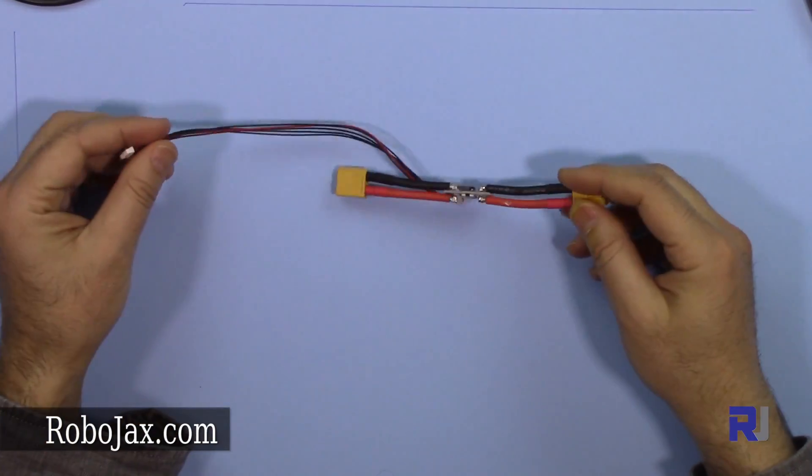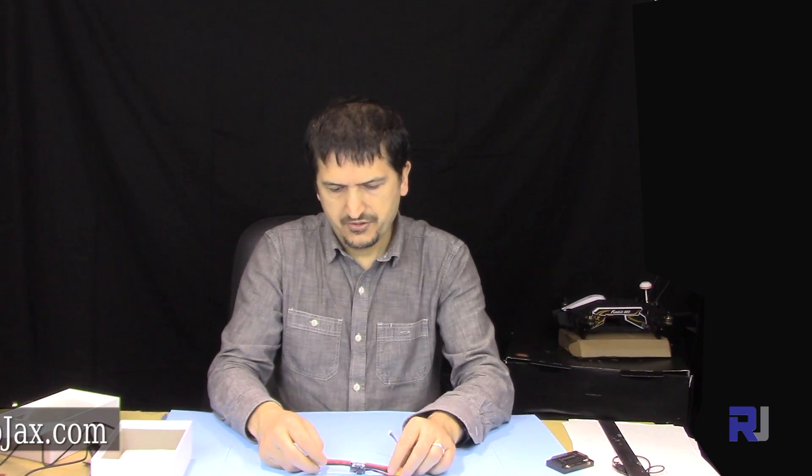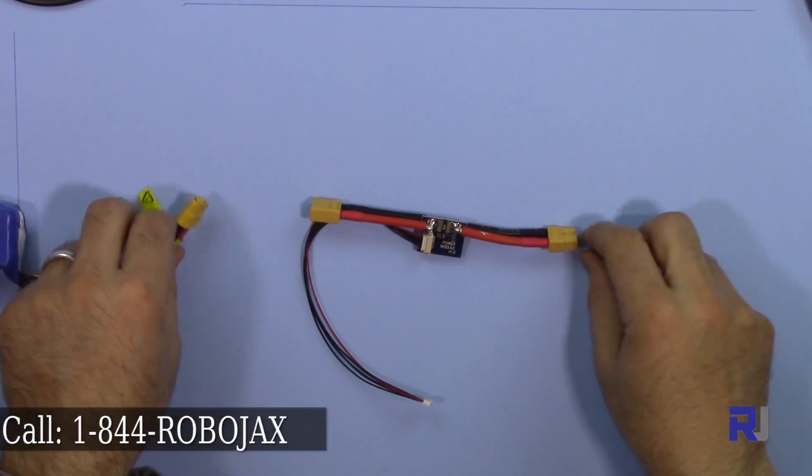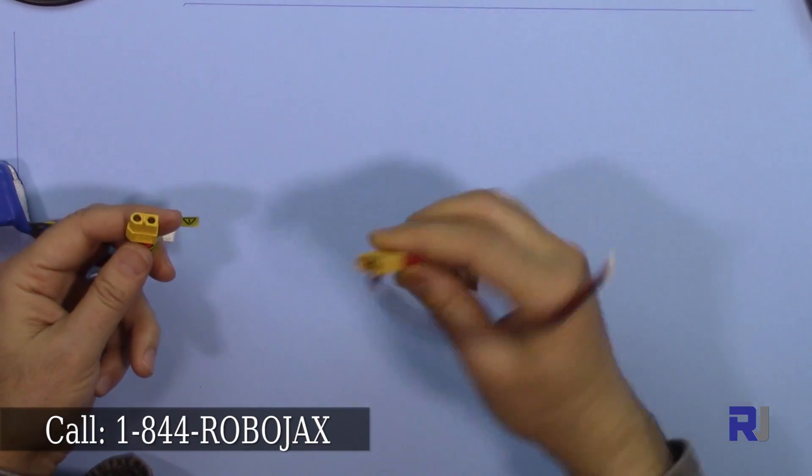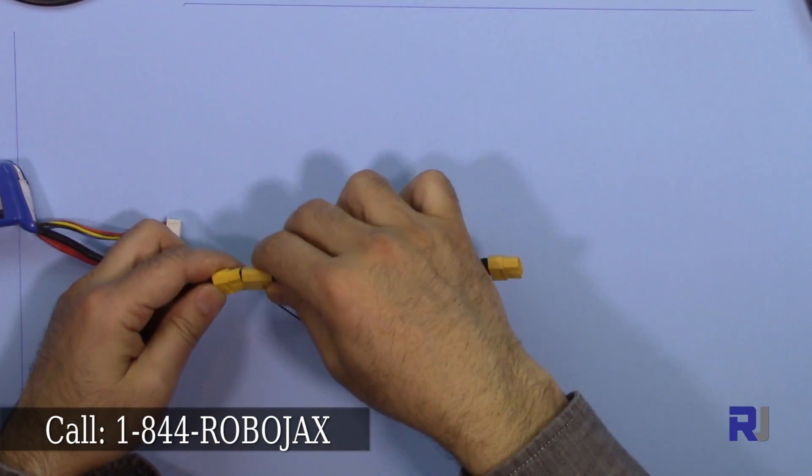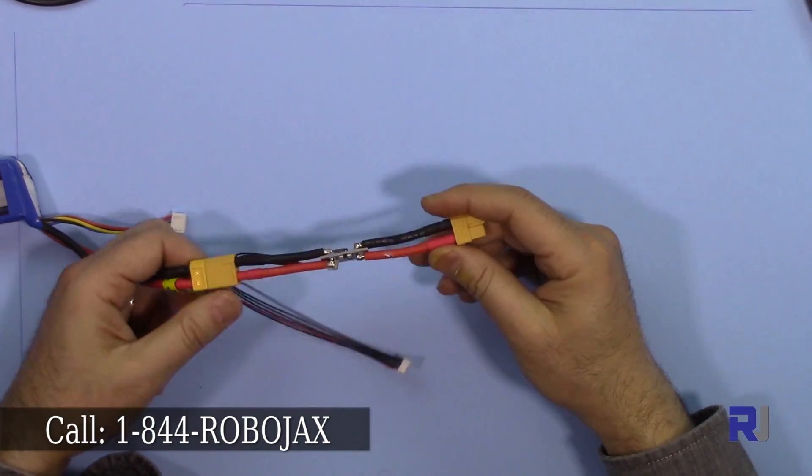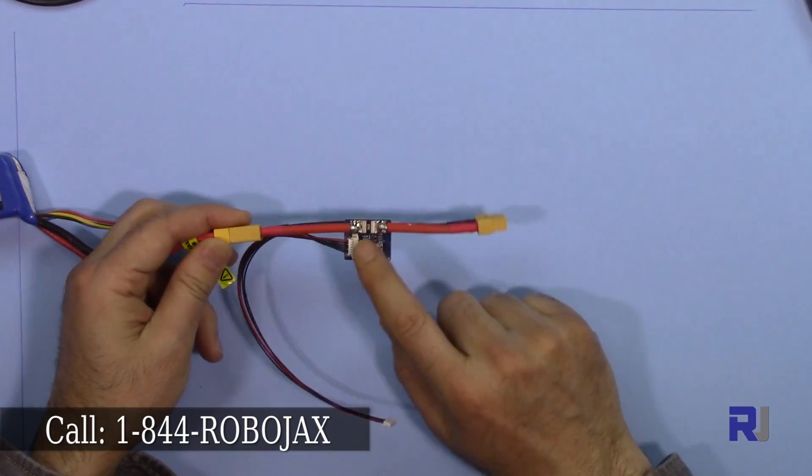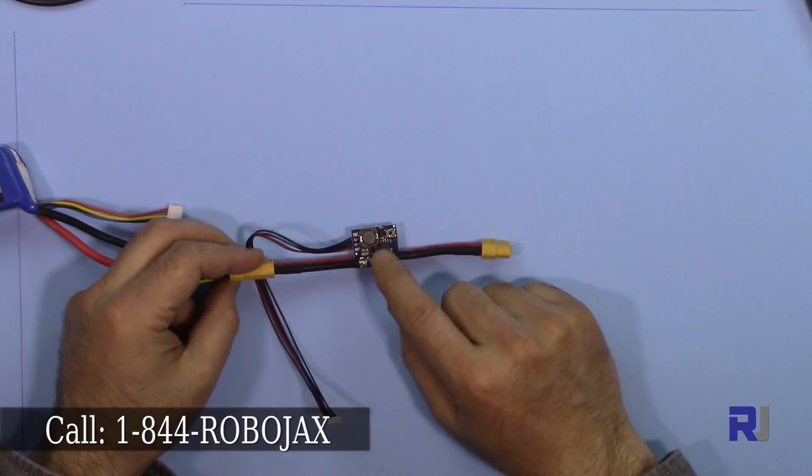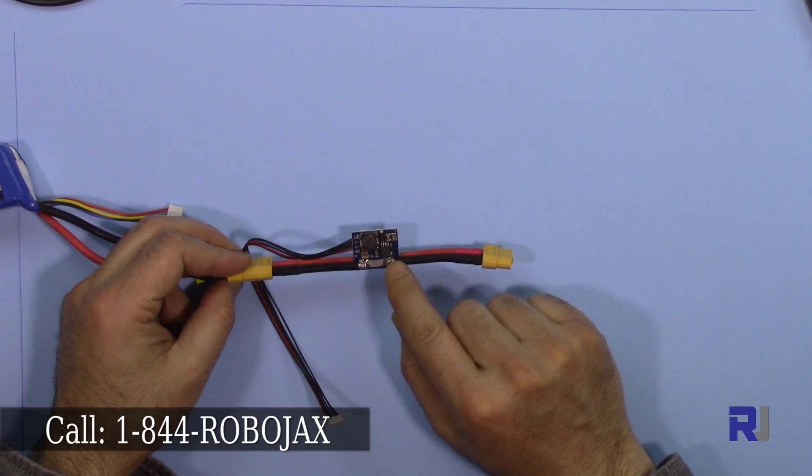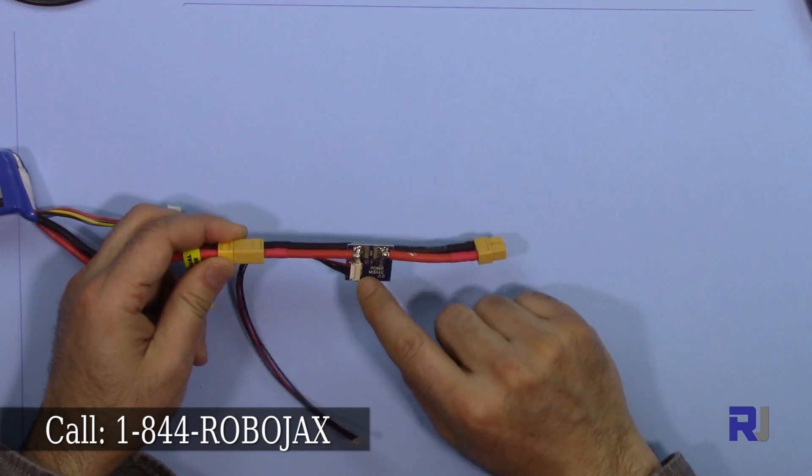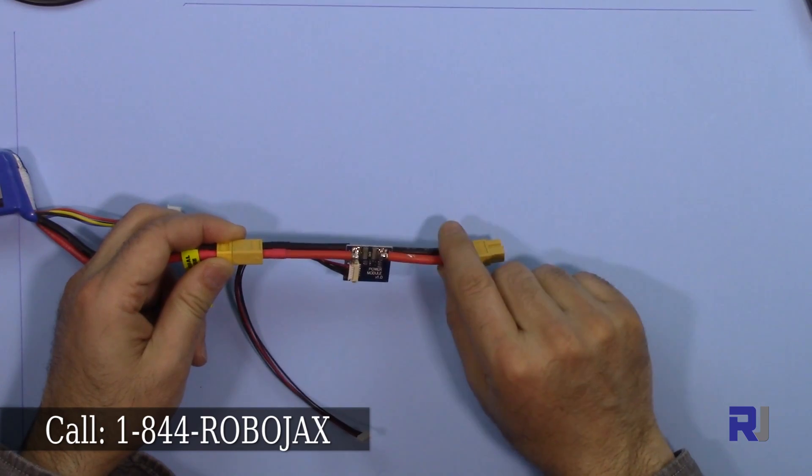The first thing, this is the power module that you will connect to your battery. This is your battery connector. The job of this power module is to supply power to the drone, and here we have some circuits that detect the power.